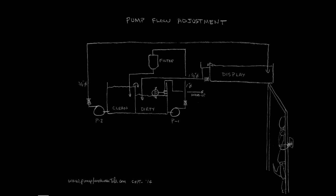The pumps you buy will no doubt have a larger capacity — more head and flow — than your calculations determine. It's better to have a bit more capacity than a bit less. Therefore, you will want to control the flow out of each pump to provide the flows you require to the different parts of the system. A ball valve on the discharge of each pump will help you achieve that.